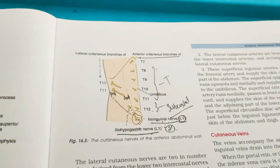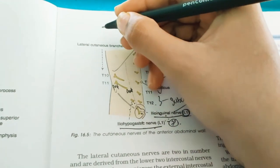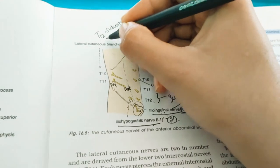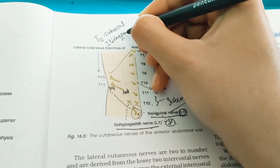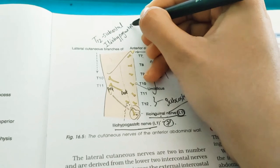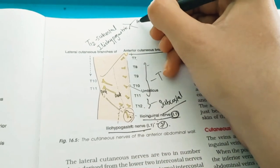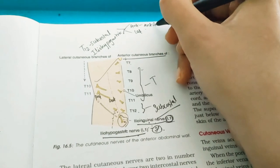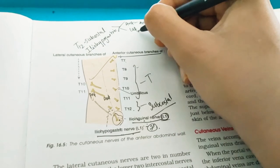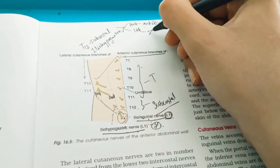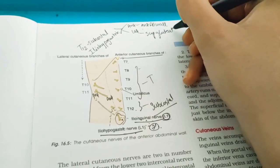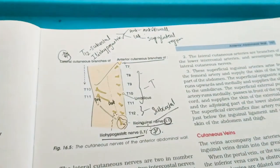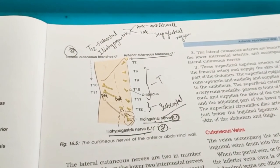To clarify: both T12 (subcostal) and iliohypogastric divide into an anterior cutaneous branch and a lateral cutaneous branch. The anterior cutaneous branch supplies the anterior abdominal wall, while the lateral cutaneous branch supplies the superior gluteal region. These two nerves are important because they serve dual roles.